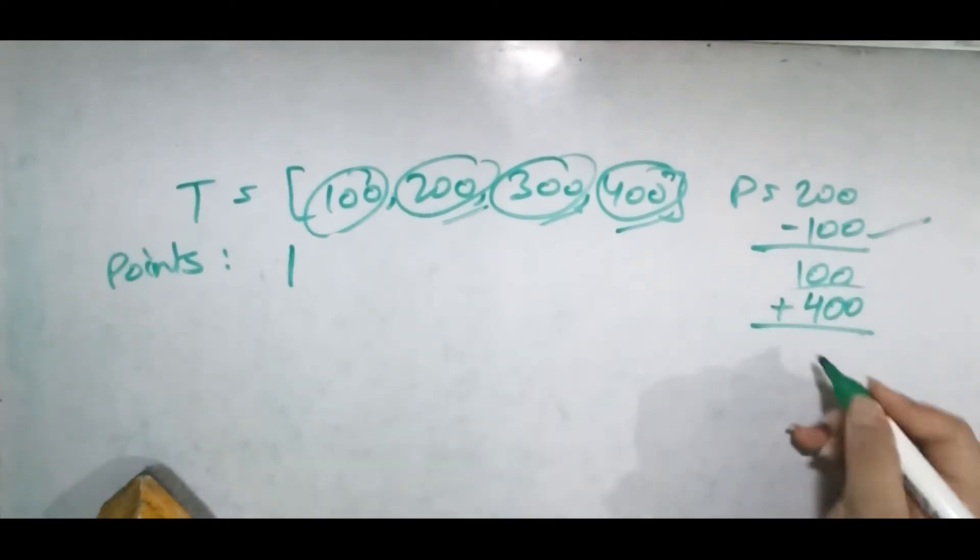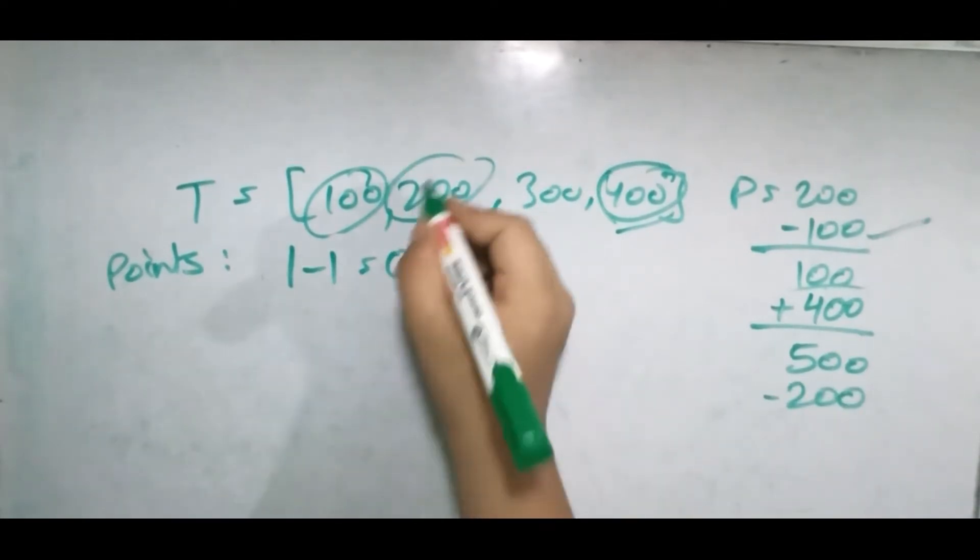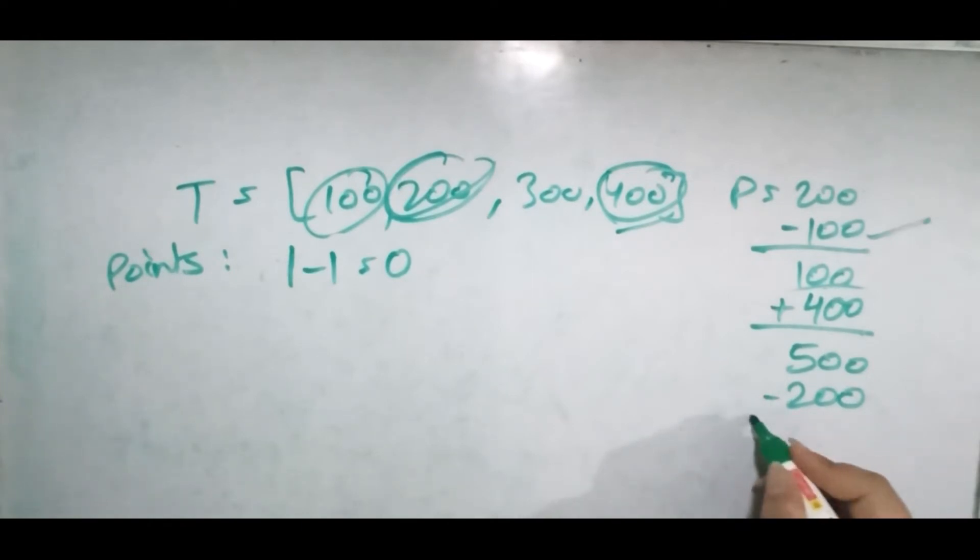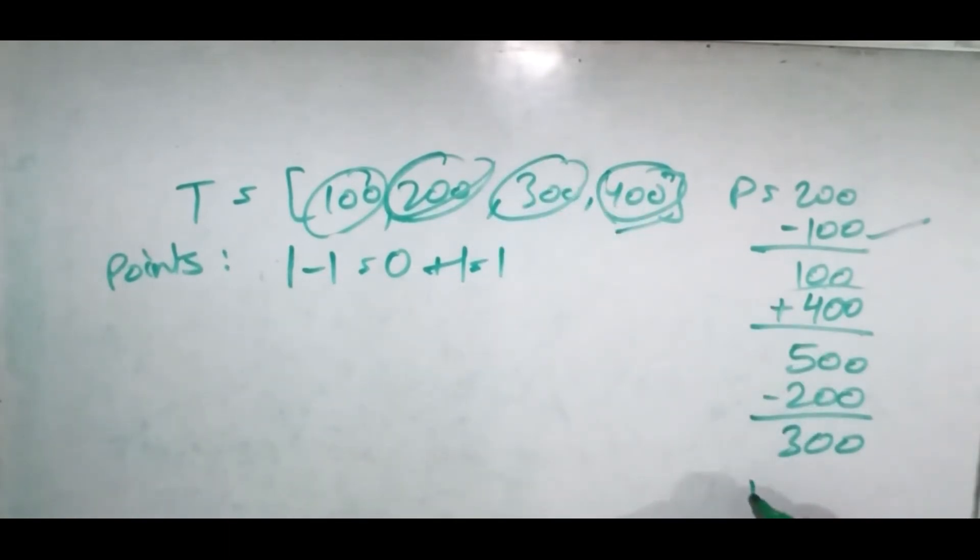So it becomes 500 power and minus one which becomes zero points. Now we can use it face up, so we're using it face up, plus one, so it becomes one point. And again this is face up, so we use it face up.